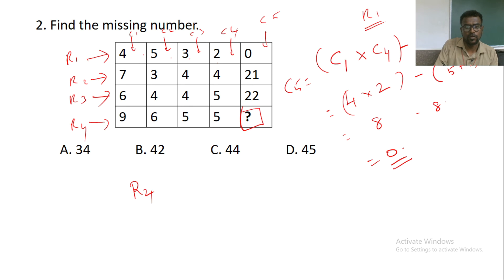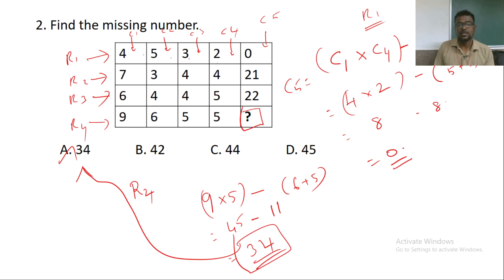So let us apply the same logic in row 2. Sorry, no need to go for row 2. We will go for row 4 directly. So here we are going to do 9 into 5 minus 6 plus 5. So we are all aware, 9 times 5 is 45 minus 11 which is nothing but 34. Yes, 34 is there in option A. So the correct answer for this question is 34.